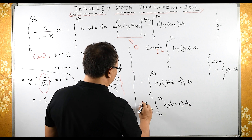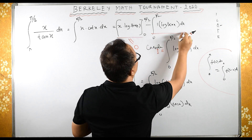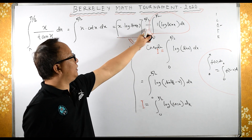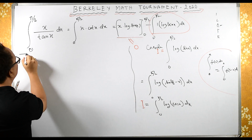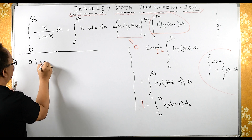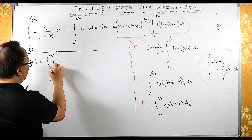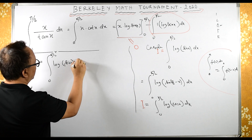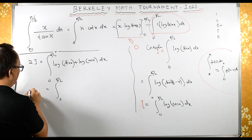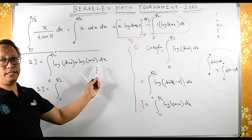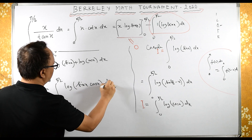The boundary term is 0, so we keep the minus sign. Adding the two expressions for I: I + I = 2I = ∫₀^{π/2} [log(sin x) + log(cos x)] dx. By the log property log m + log n = log(mn), this becomes 2I = ∫₀^{π/2} log(sin x · cos x) dx.